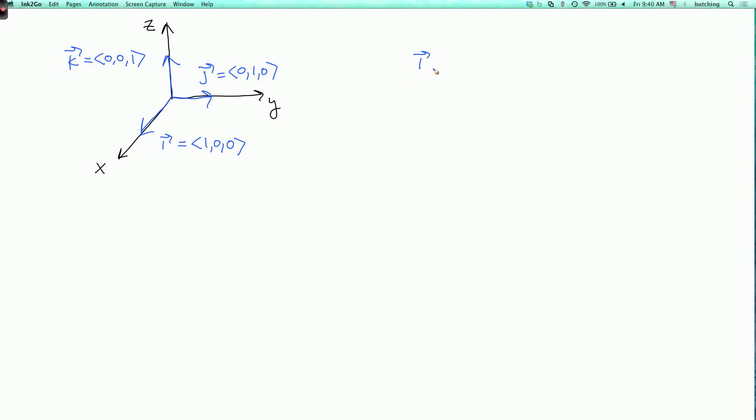Then i, j, and k satisfy the right hand rule. And that's consistent with the fact that if we look at the determinant 1, 0, 0, 0, 1, 0, 0, 0, 1, then this determinant is 1.